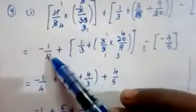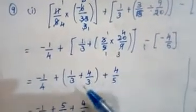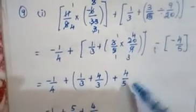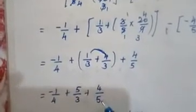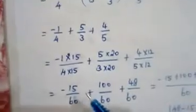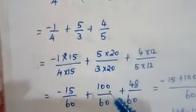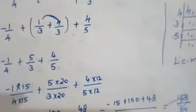After simplification: first bracket = −1/4; second bracket: 1/3 + 4/3 = 5/3; third bracket: minus × minus = plus, giving 4/5. Now combine: −1/4 + 5/3 + 4/5. Find LCM of 4, 3, 5 = 60. Convert: 4 → ×15, 3 → ×20, 5 → ×12. Numerators: −1×15 = −15, 5×20 = 100, 4×12 = 48. Denominators all 60; simplify: 100 + 48 − 15 = 133.